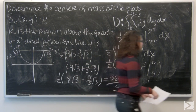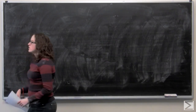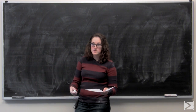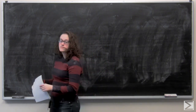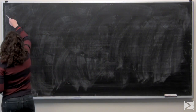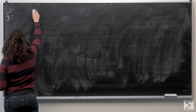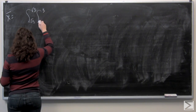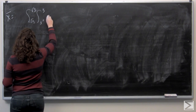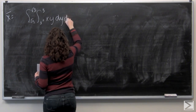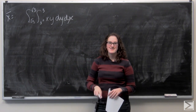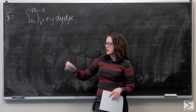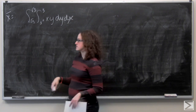Now let's work on finding x-bar. I'm going to set up a really similar integral to the one I was working with earlier, but now I'm going to have x times y as my function to integrate. I'll divide by the denominator we found, so I'm multiplying by 5 over 36 square roots of 3.